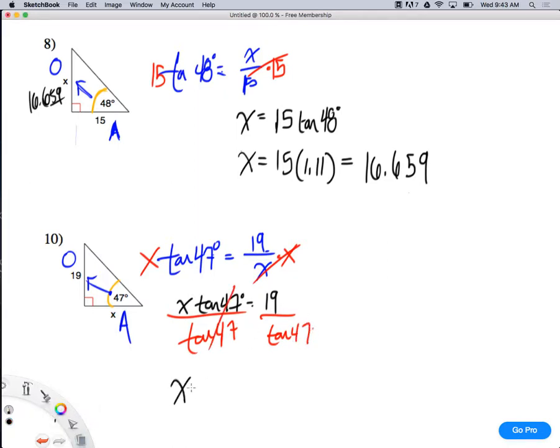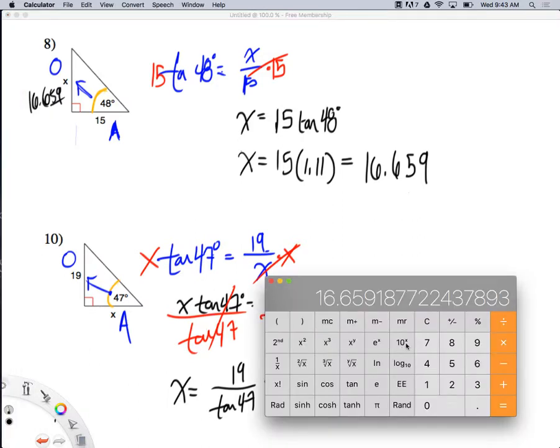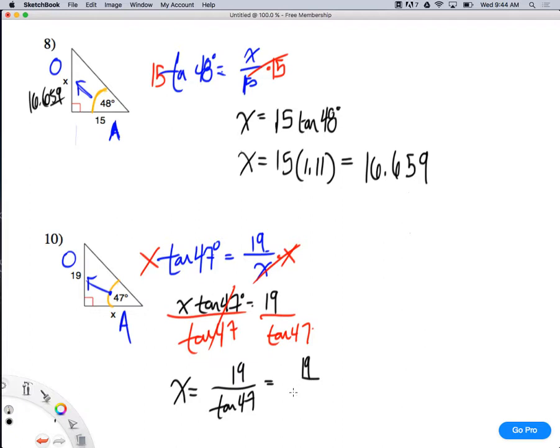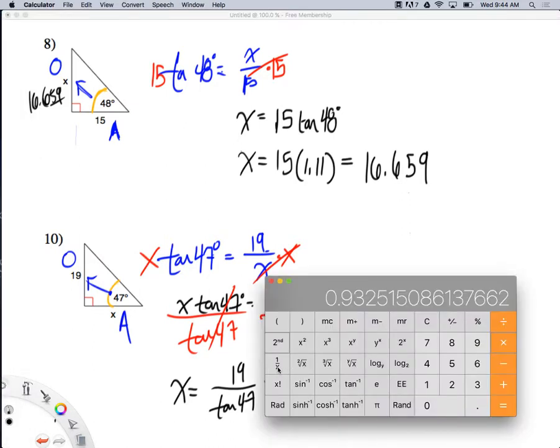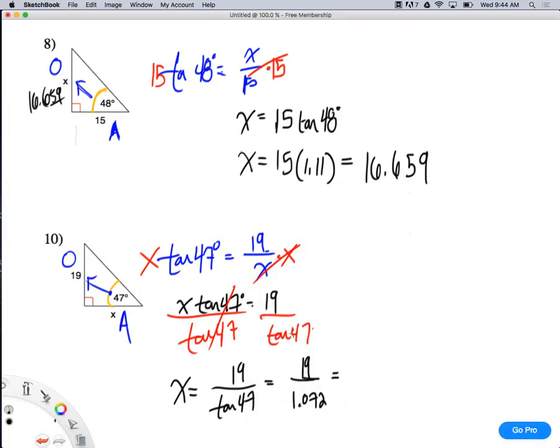And I end up with x equals 19 over tangent of 47. So it's 19 over 1.072, which equals 17.718. There you go. Is that reasonable? Sure. If this is 19, that could be 17.718. Any questions on that? No? All right. Simple stuff, right? We've done this before with sine and cosine. So maybe you can see why I didn't bother with doing like tangent and sine and cosine all at once. Because once you know sine and cosine, the tangent is simple to get. So cool. Any questions?